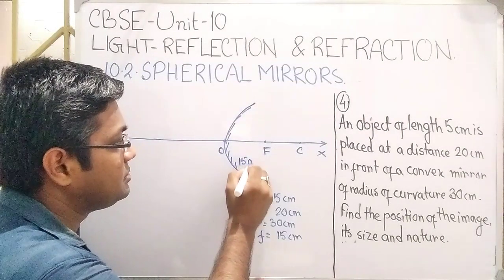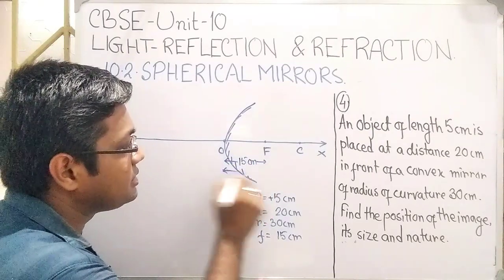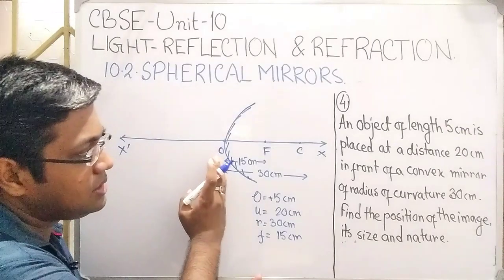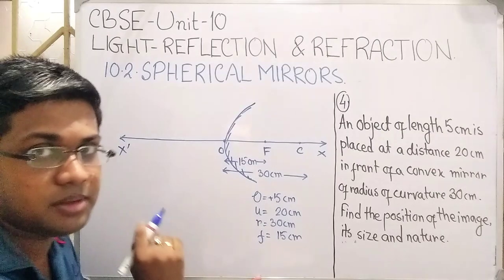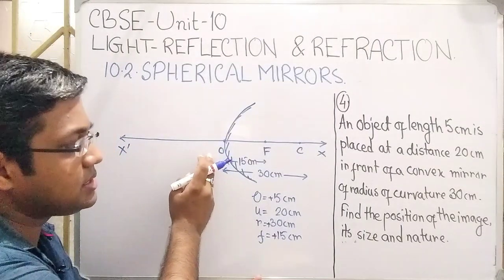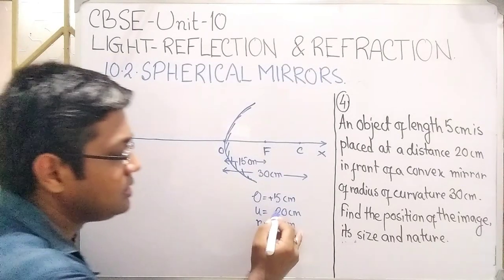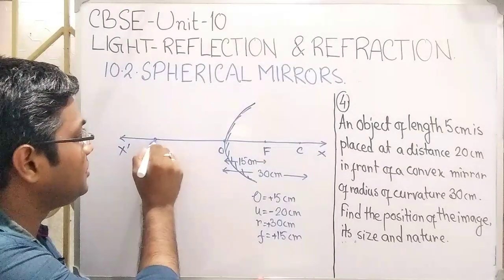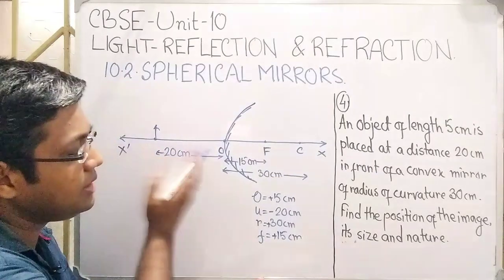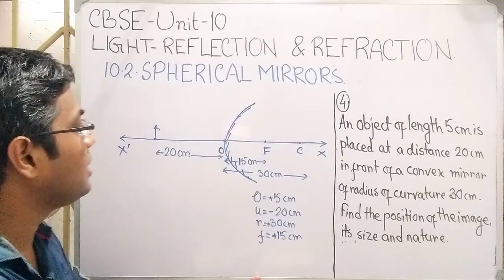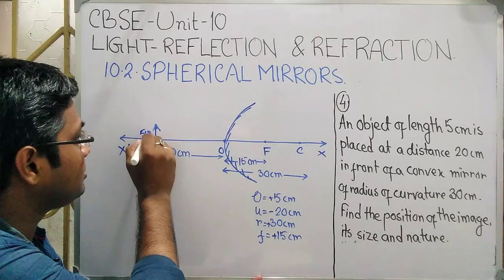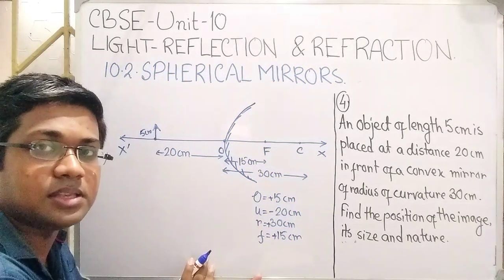f is 15 cm and R is 30 cm, that is between O and C, and O and F. Since the focus and center of curvature are on the right-hand side of the pole of the mirror, we can say R is plus 30 and f is plus 15. The object is placed at a distance 20 cm in front of the mirror, on the left-hand side, so u is minus 20 cm. The length of the object is 5 cm, placed on the upside, so object height O is plus 5 cm.